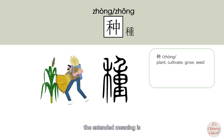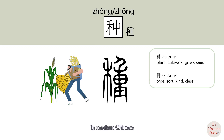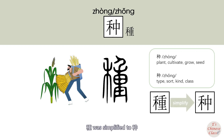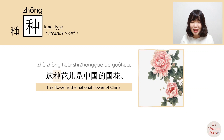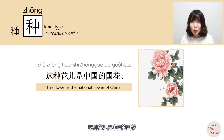The extended meaning of 中 is 'middle' or 'center.' In modern Chinese, 中 was simplified to its current form. For example: 这种花是中国的国花 — This flower is China's national flower.